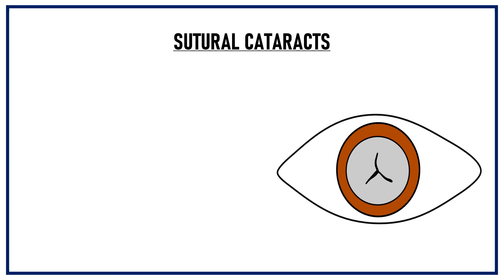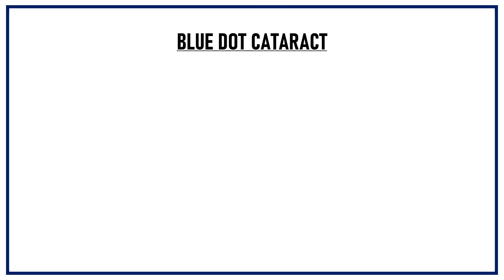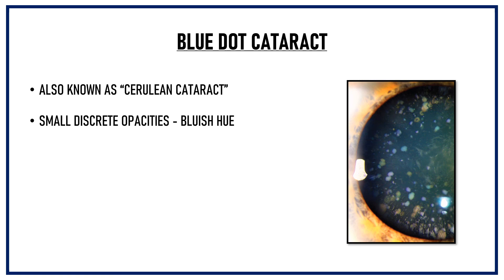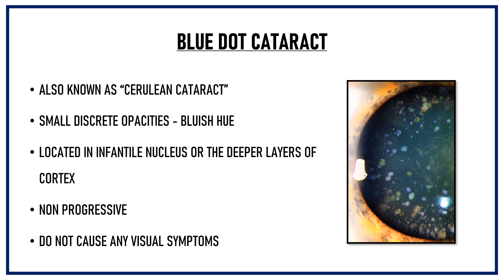Sutural cataracts occur when punctate opacities are distributed along the lens sutures. They are congenital in nature and they very rarely affect vision. One more very commonly seen developmental cataract is a blue dot cataract, also known as a cerulean cataract — cerulean being a shade of blue. Blue dot cataract consists of small discrete opacities with a bluish hue, located in the peripheral part of the infantile nucleus or the deeper layers of cortex. These opacities are non-progressive and they do not cause any visual symptoms at all.